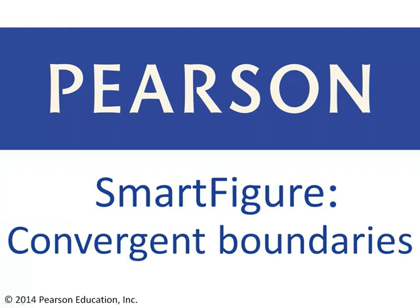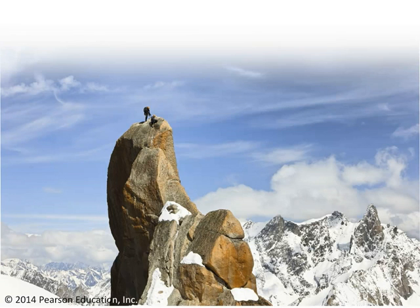Let's start our discussion with this image. This is a picture of mountain climbers in the Alps. The Alps are a very impressive, very rugged range of mountains that run across southern Europe. Why are the Alps there? How did they form, and what does that have to do with convergent boundaries?